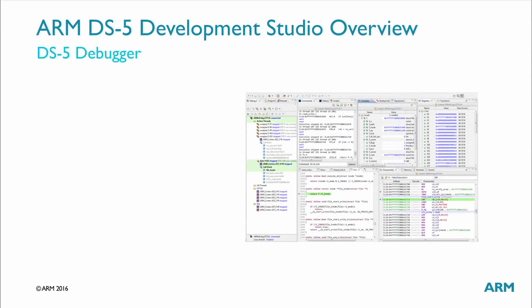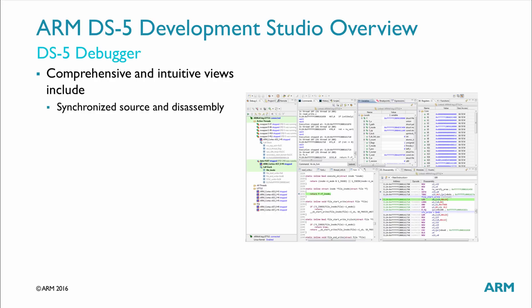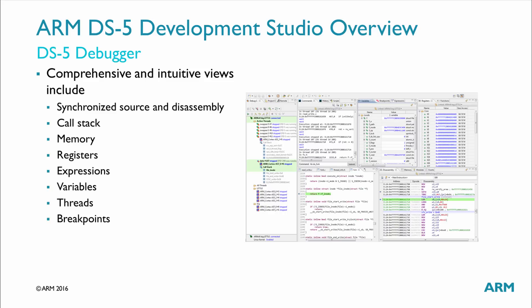The DS5 debugger simplifies debugging bare-metal and Linux applications with comprehensive and intuitive views, including synchronized source and disassembly, call stack, memory, registers, expressions, variables, threads, breakpoints, and trace. Using the debug control view, you can single step through applications at source level or instruction level and see the other views update as the code is executed.